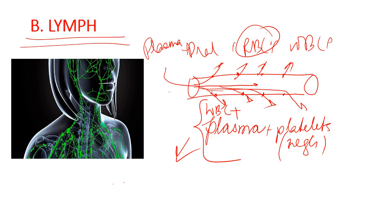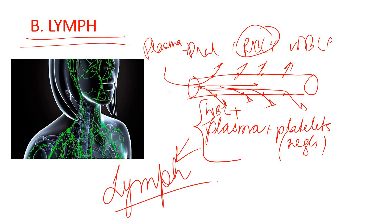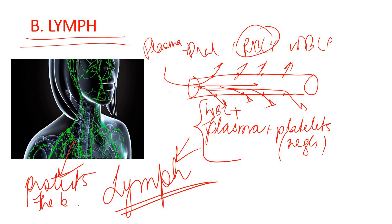This WBC and plasma that comes out is actually the lymph. You can see the green portion — these are the lymph vessels. Whenever lymph comes out of the blood capillaries, the lymph vessels carry those WBC and plasma. In these lymph vessels there will be lymph fluid, and this lymph fluid helps to protect the body against any sort of infection.